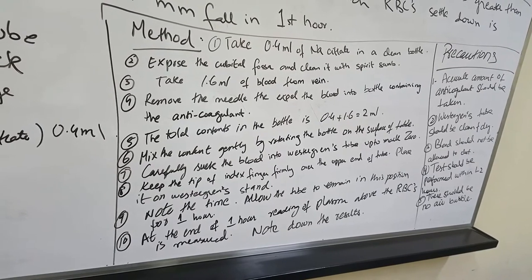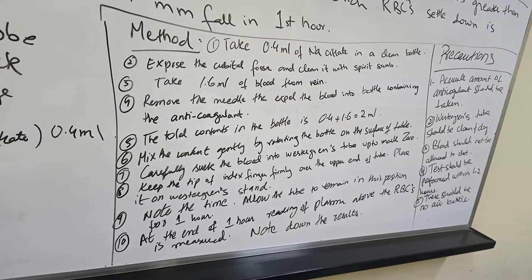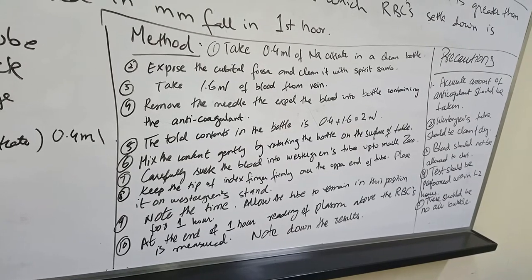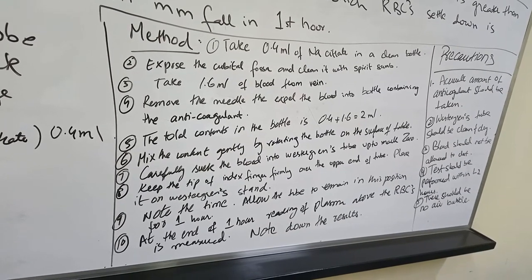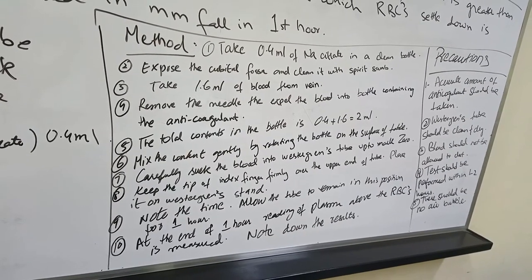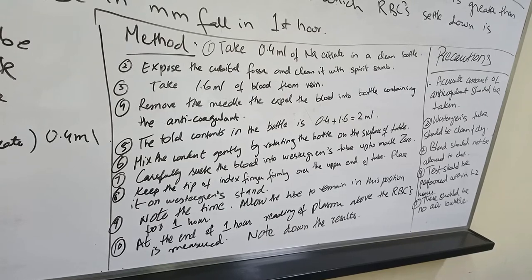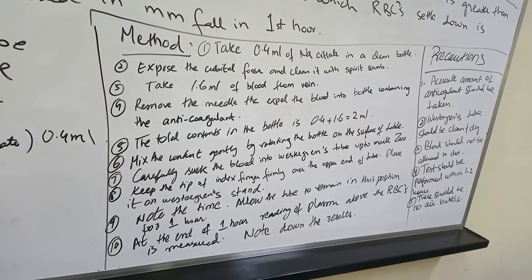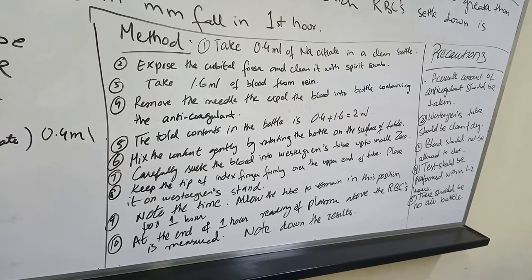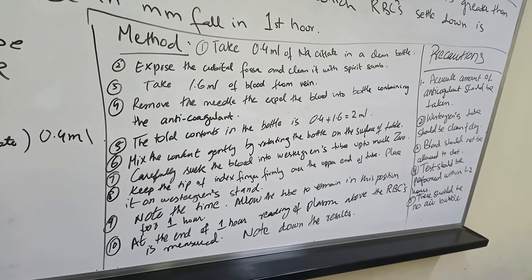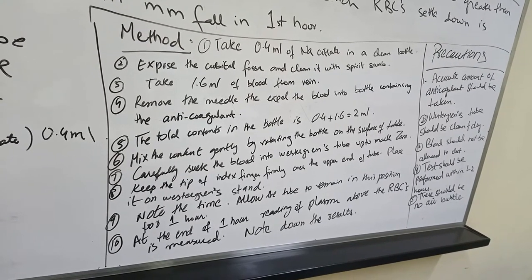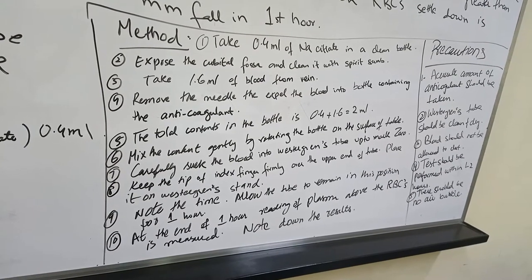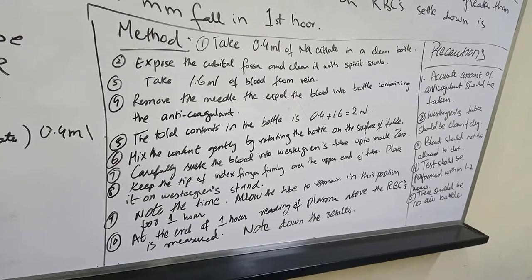Carefully suck the blood into the Westergren tube up to the mark 0, then keep the tip of the index finger firmly over the upper end of the tube and place the tube into the Westergren stand. Note the time and allow the tube to remain in this position for 1 hour. At the end of 1 hour, the reading of the plasma above the RBCs is measured.